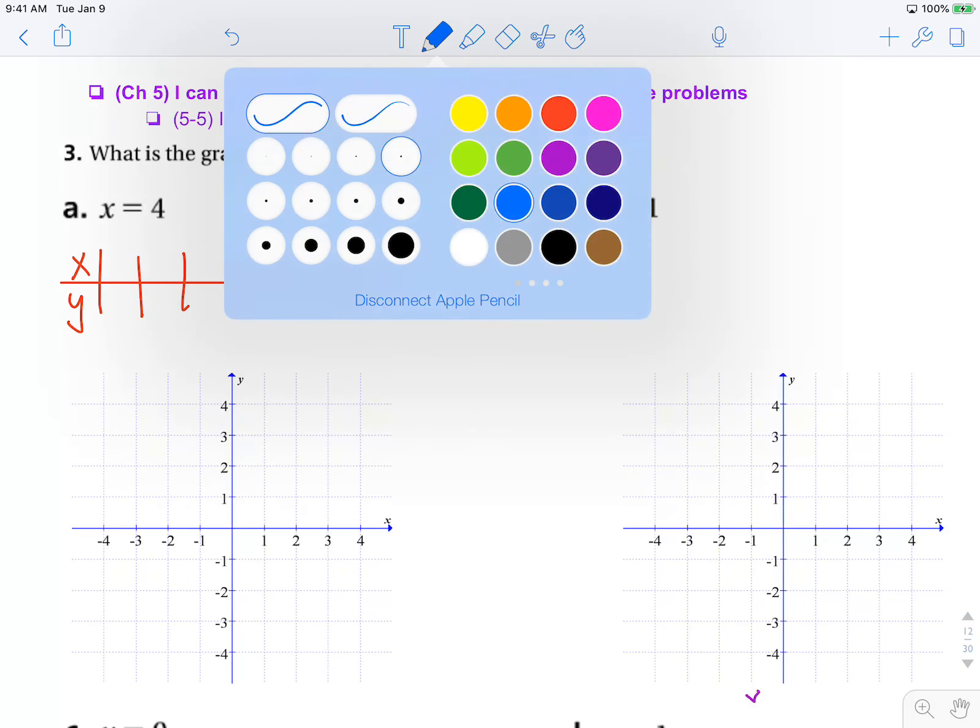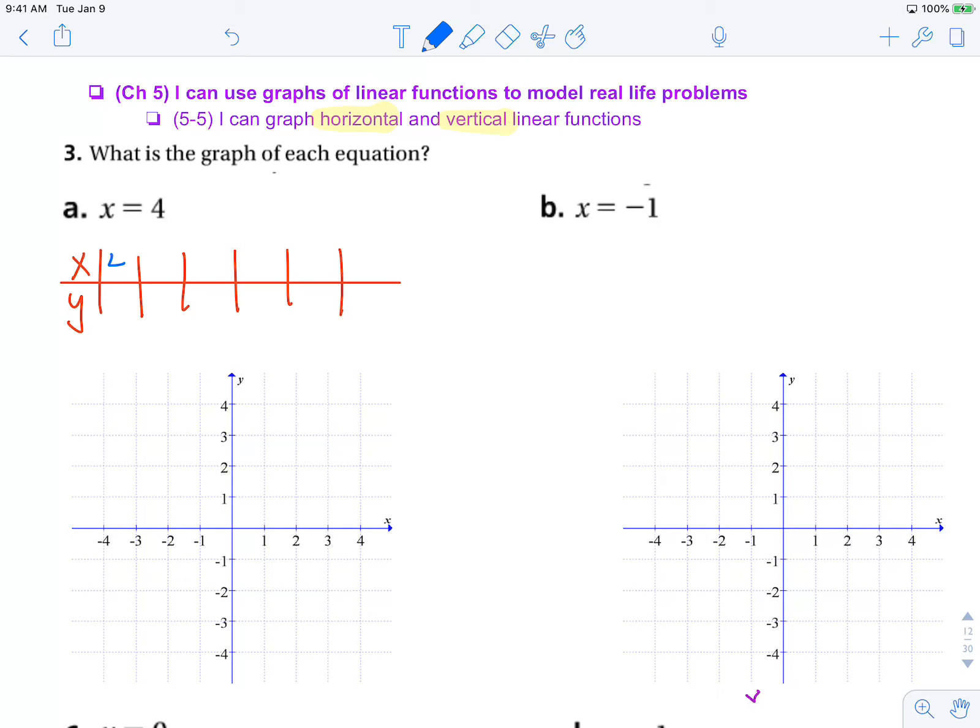What we know is that no matter what y is, x is going to be 4. That means y could be 0, it could be negative 1, it could be 2, it could be 3, it could be any number.